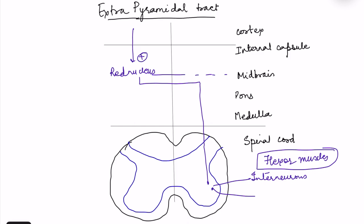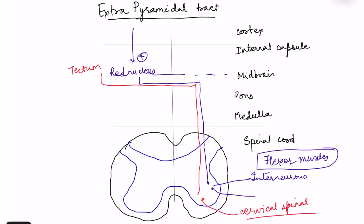The rubrospinal tract also receives facilitatory input from the cortex. Next is the tectospinal tract, which also arises from the midbrain — from the collicular nuclei or tectum. It crosses to the other side and supplies the cervical spinal cord, controlling head and neck muscles. Its function is to mediate reflex turning of the head and eyes toward a sudden unexpected stimulus — such as a sudden sound — because the colliculi receive input from auditory and visual pathways.